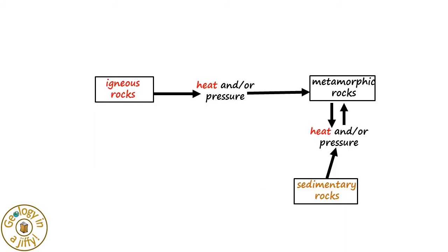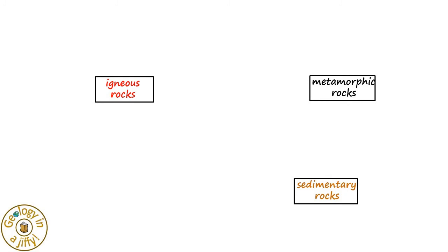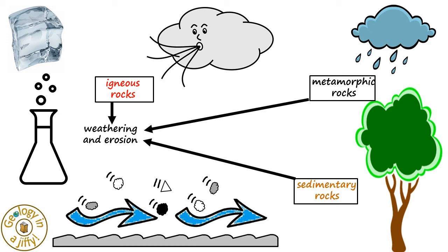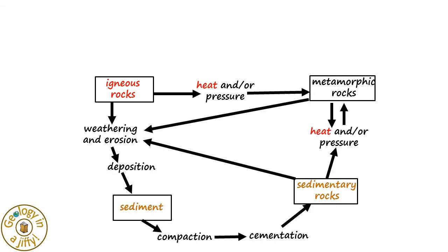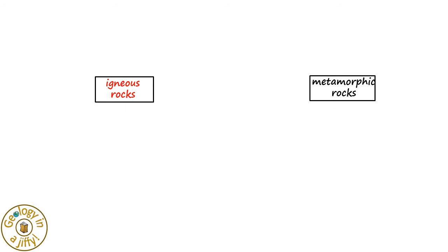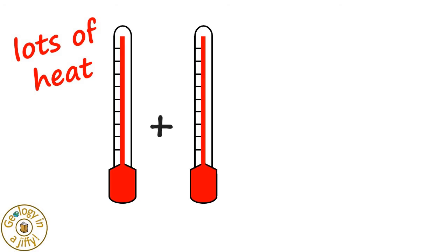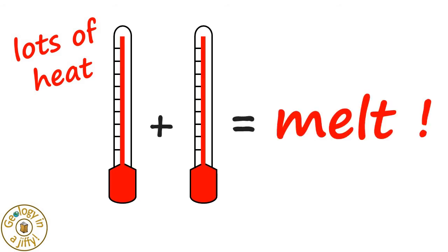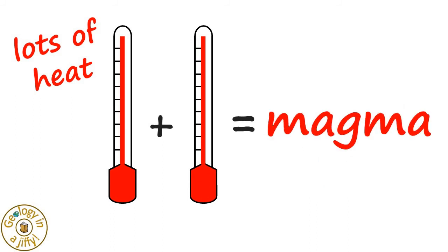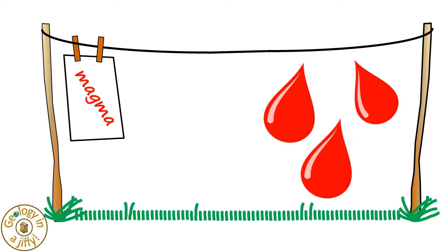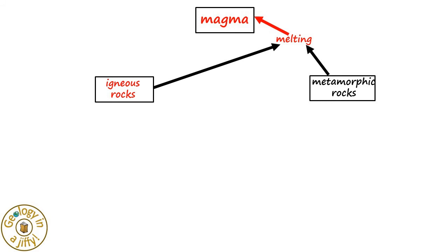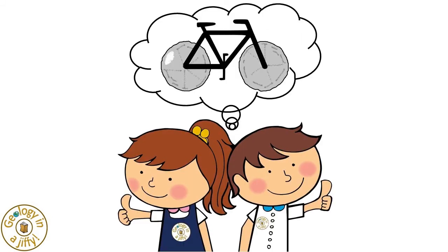Metamorphic rocks themselves can also be metamorphosed. Igneous, metamorphic, and sedimentary rocks can all be subjected to weathering and erosion, so making more sediments and continuing the rock cycle. Sometimes, igneous and metamorphic rocks can, over a very long time, be subjected to lots of heat — this can then cause them to melt, forming magma. And so, the rock cycle is complete.